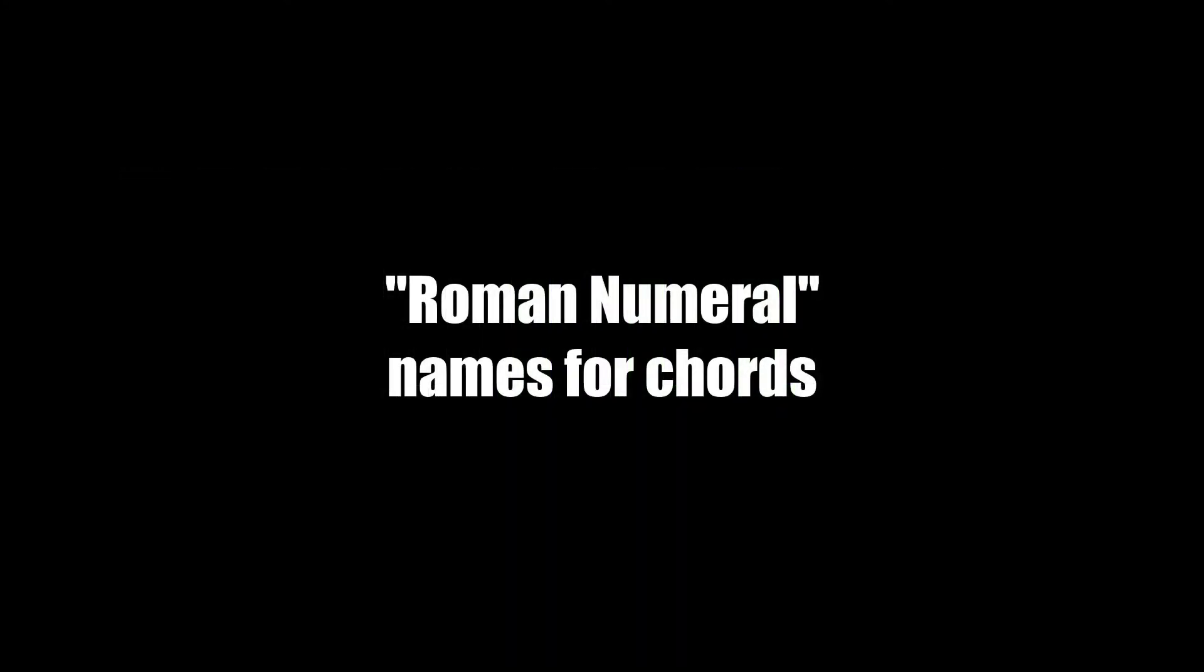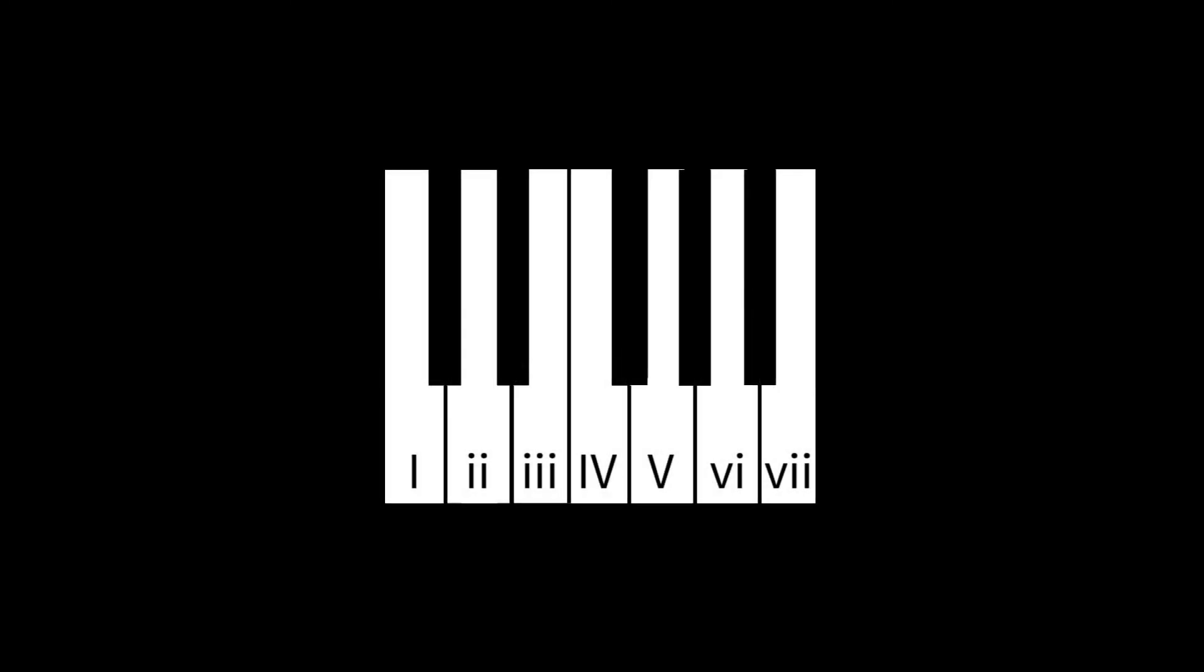Now, it's common when analyzing chords in a song to refer to the roman numeral names of those chords. This becomes very helpful when describing how complicated chord progressions behave, but it's a simple concept to start out. Each roman numeral name corresponds to the scale degree at its root, so one is one, two is two, and so on all the way up to seven. So referring back to what we said a minute ago, in major, one is major, two is minor, three is minor, four is major, five is major, six is minor, and seven is diminished.